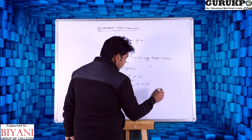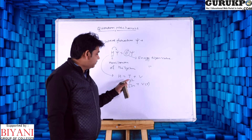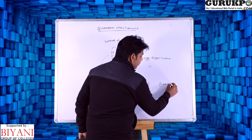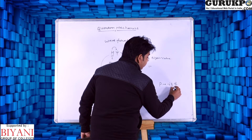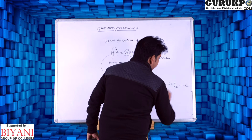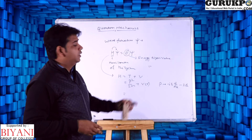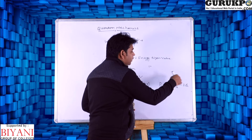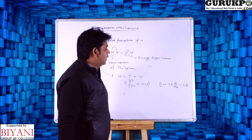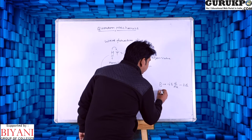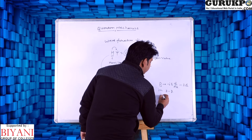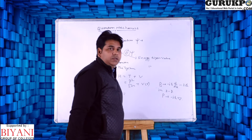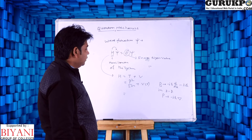We consider P as the operator form. In one dimension, P equals minus i H-bar d by dx. If you consider momentum in three dimensions, P equals minus i H-bar del, where del is the three-dimensional gradient operator.